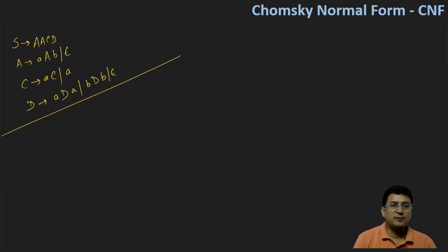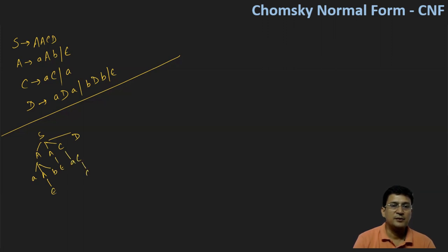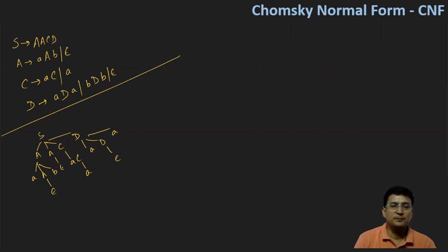So first we identify all the nullable symbols. S produces AACD, A produces AAB, and this A is epsilon. C produces AC and then A. D produces A, and this D is epsilon. So you can see A is a nullable symbol, C is a nullable symbol, D is a nullable symbol, and S is also a nullable symbol.